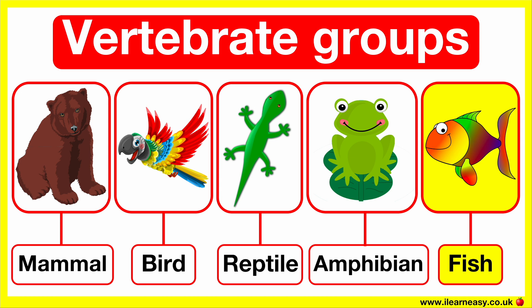Fish have scales and they use their gills to breathe. Fish lay soft eggs in water and their temperature changes; therefore, they are cold-blooded animals.